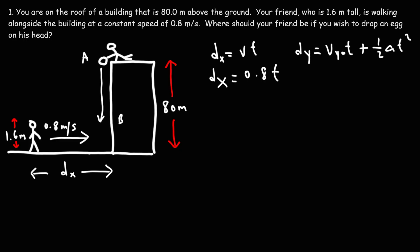Now, because you're releasing the egg from rest, you're not throwing it down, vy initial is 0, so this disappears. So the vertical displacement is simply 1 half at squared.